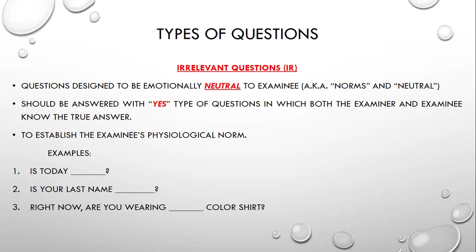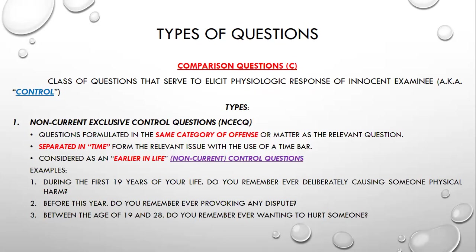Next is the comparison question, also called the control question. These are a class of questions that serve to elicit a physiological response from innocent examinees. These are responses to questions believed to elicit physiological reactions from innocent examinees. The comparison question asks about general undesirable acts, and sometimes the type of event under investigation.